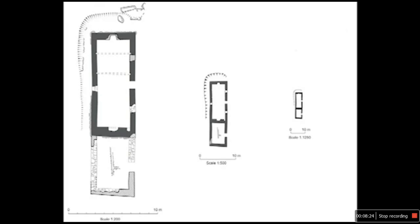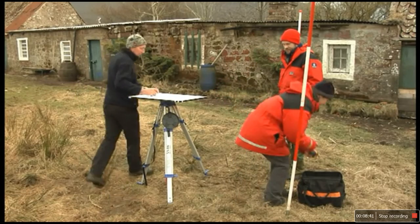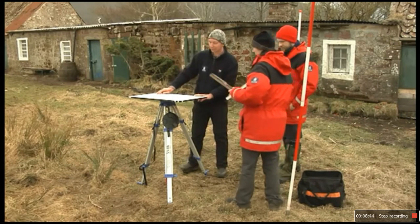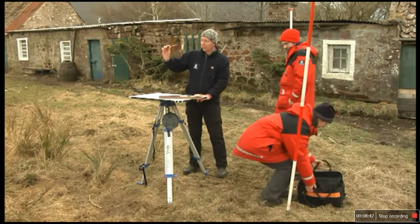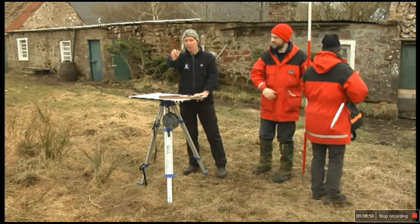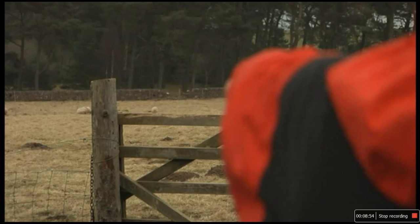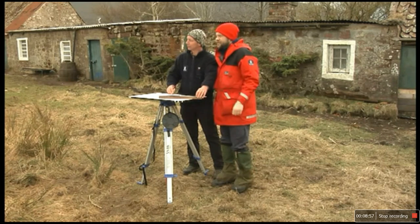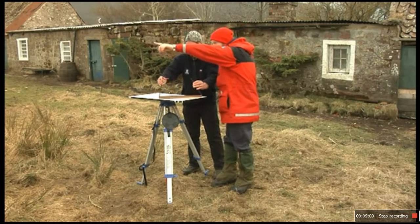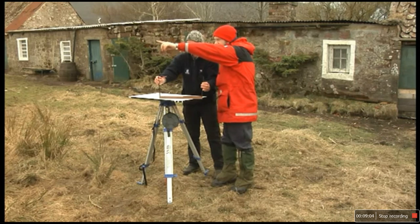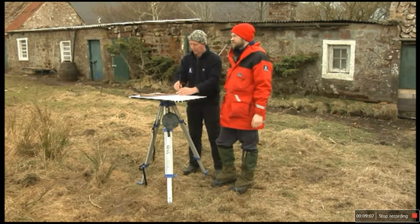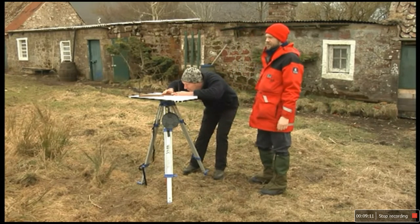In this instance, the team have decided on a scale of 1:200, which will allow them to record all the information they need from this site. Once you've decided on the scale, find the corresponding side of a scale ruler to help keep your drawing accurate. You then need to choose some reference points and cite them on your plan. These points need to be outside the area you are drawing and should be fixed points in the landscape, such as a fence post or a telegraph pole. It's important to choose points at different angles from each other — ideally they should form a triangle with the station.